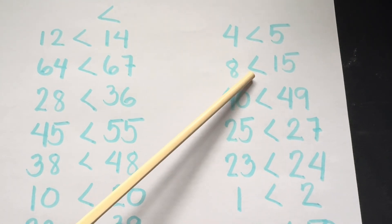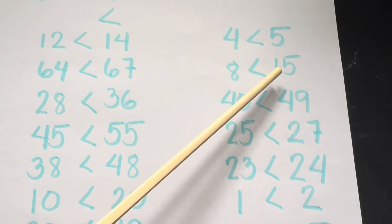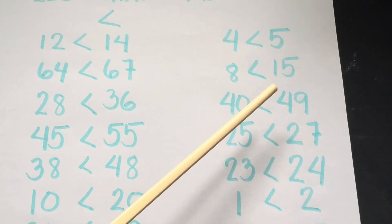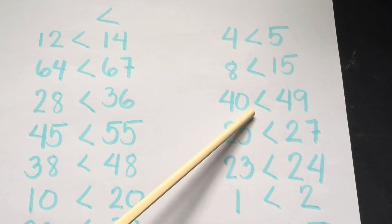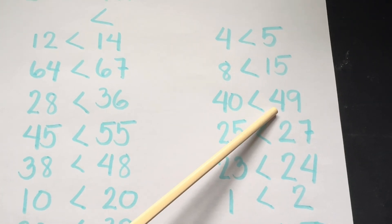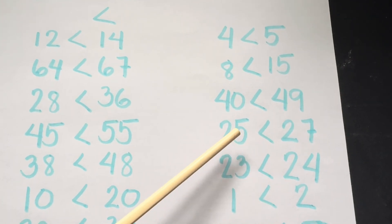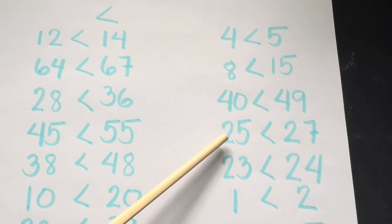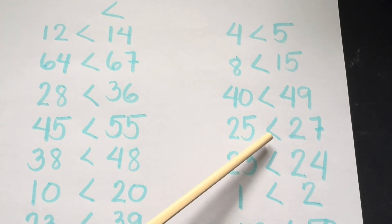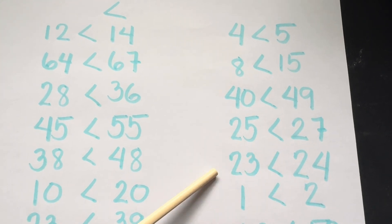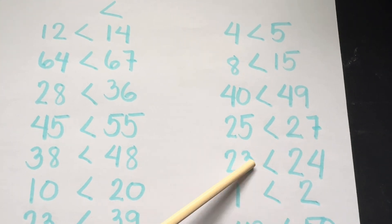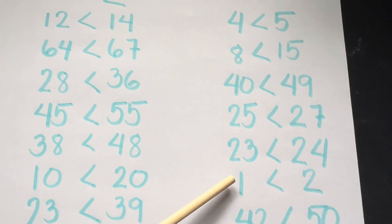Eight is less than fifteen. Forty is less than forty-nine. Twenty-five is less than twenty-seven. Twenty-three is less than twenty-four.